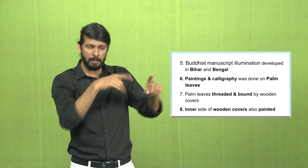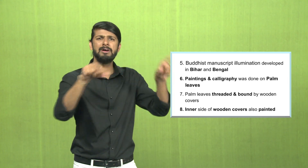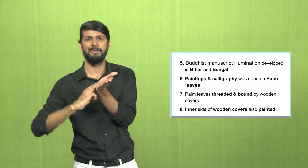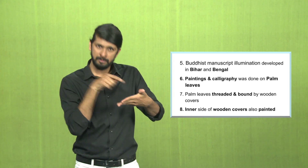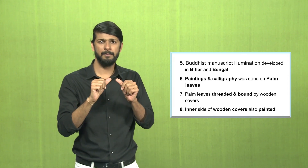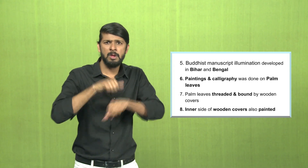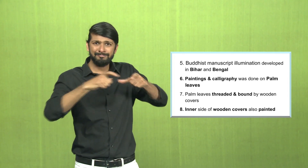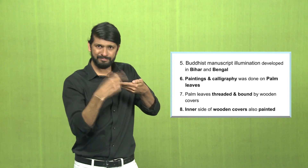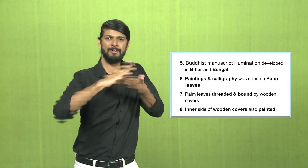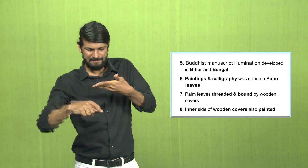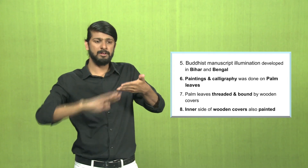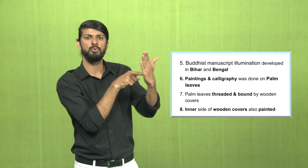The paintings and calligraphy were done on palm leaves. The palm leaves had a process where after preparation, you would thread them and then bind them with wooden covers. Also, the inner side of the wooden covers was also painted.